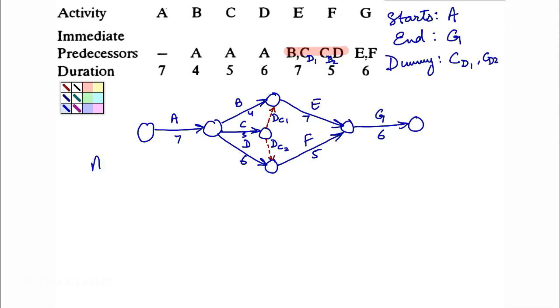We have a path A, B, E, G. The duration for this path: 7, 4 — giving 11, and 7 — giving 18, and 6 — giving 24.